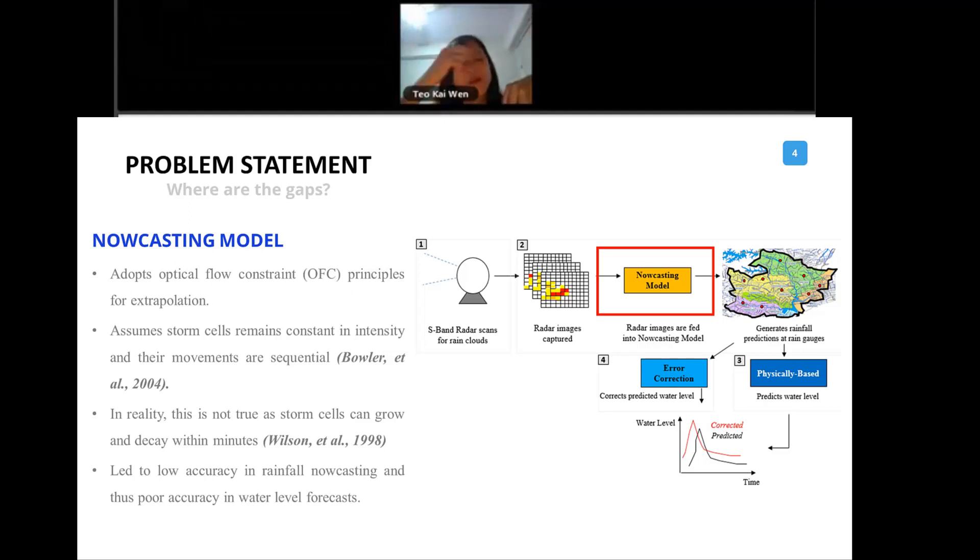This has actually led to low accuracy in the rainfall nowcast and poor accuracy in the water level forecast as well. This is one problem that Singapore has faced for many years.